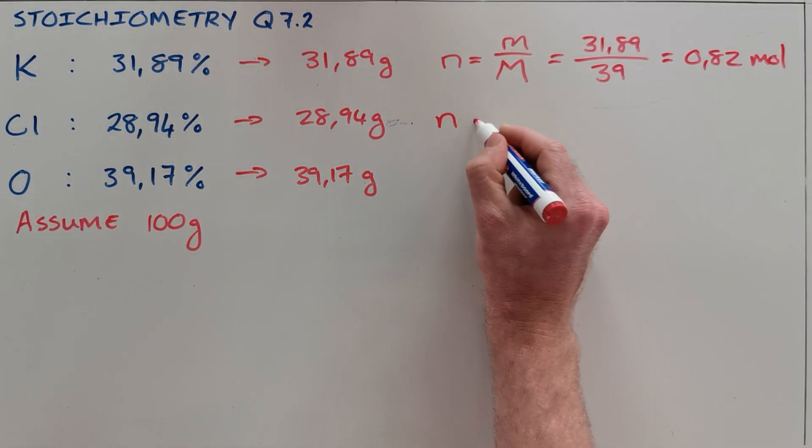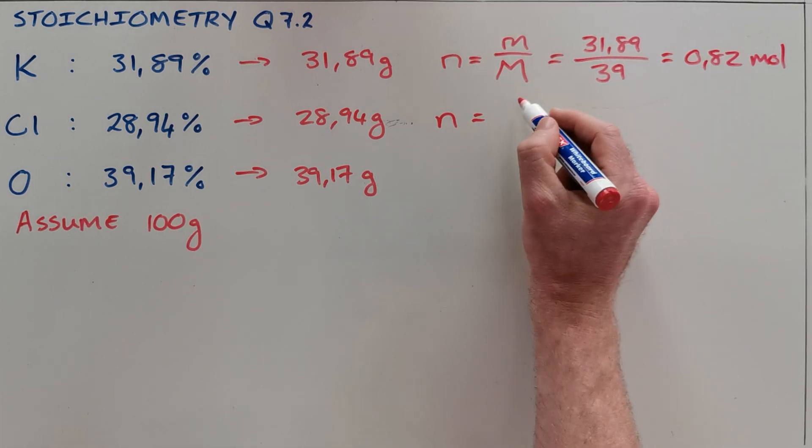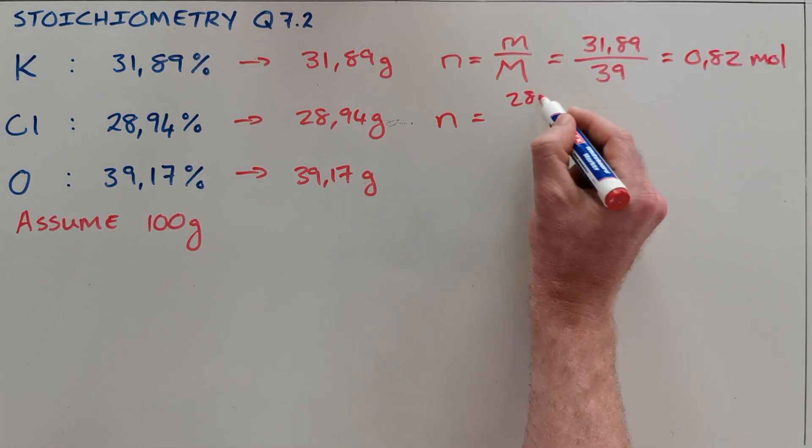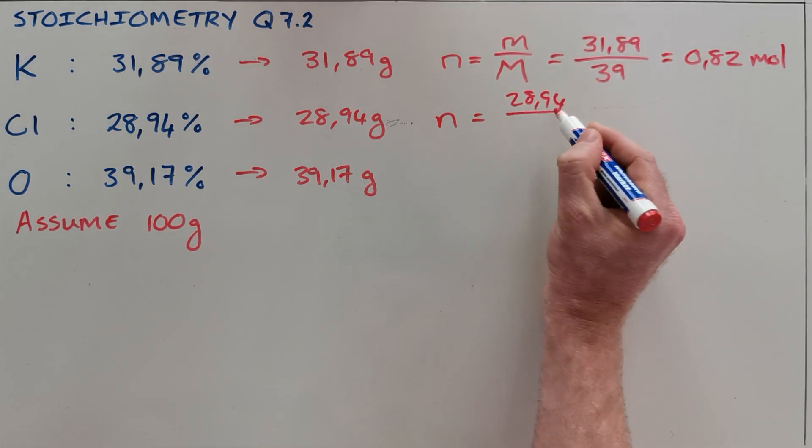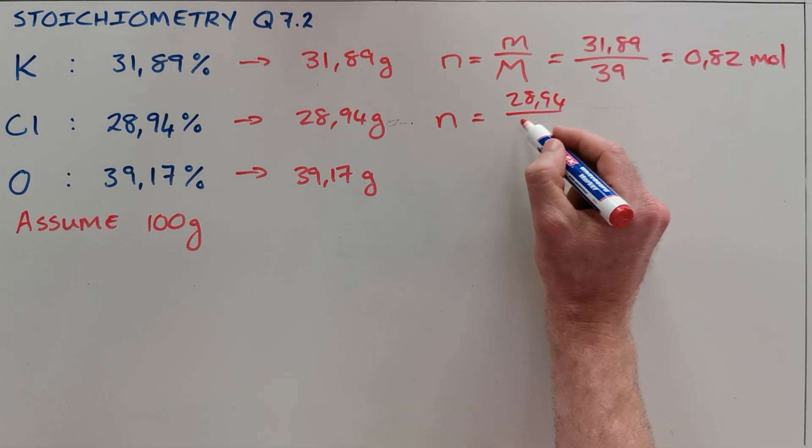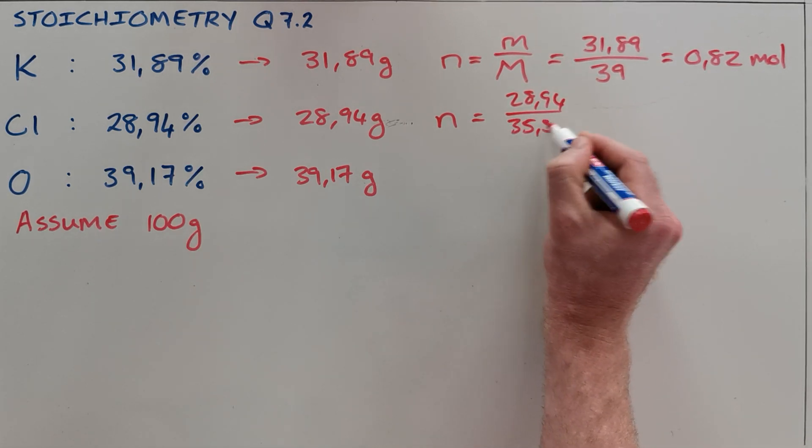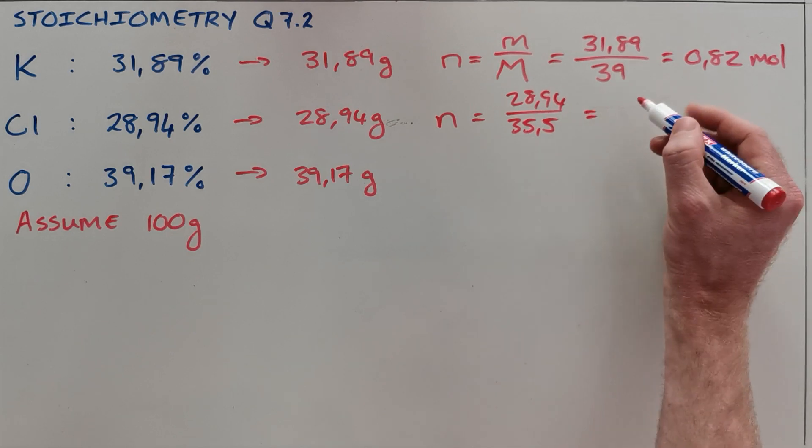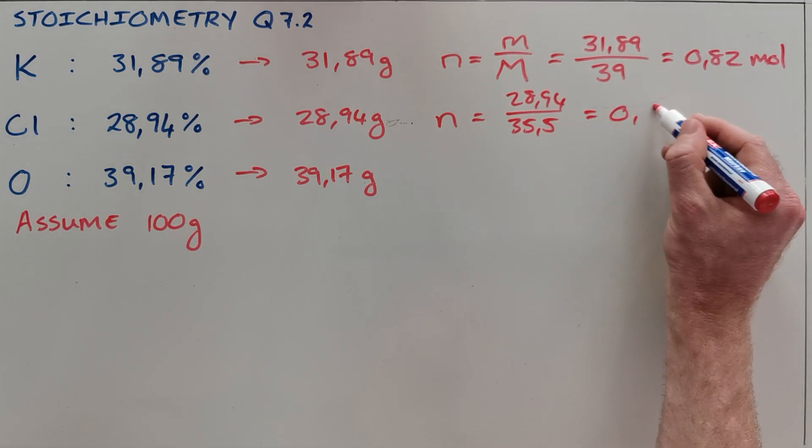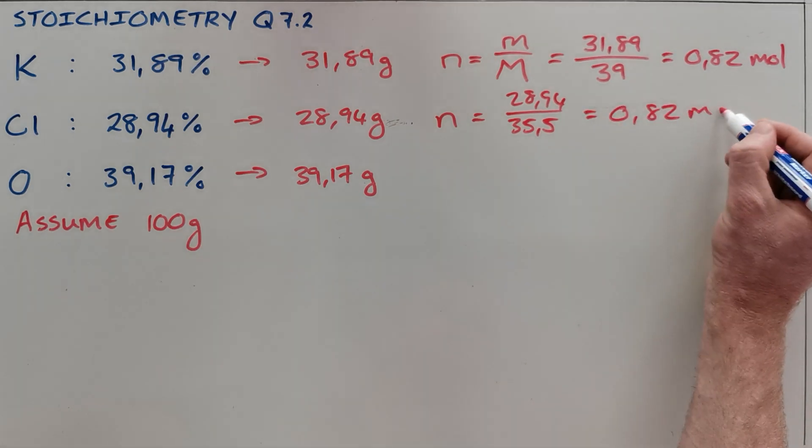We do exactly the same thing for chlorine where we have 28.94 grams of chlorine, and chlorine has a molar mass of 35.5 grams per mole, which means that we also have 0.82 moles of chlorine present in 100 grams of the substance.